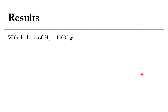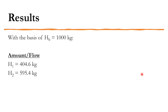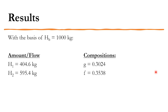Concluding: with the basis of Hb = 1000 kg, honey 1 is 404.6 kg and honey 2 is 595.4 kg. The composition of blend Hb is: glucose 0.3024, fructose 0.3538, sucrose 0.06595, and water 0.1779. Material balance has been solved quickly and efficiently using EES — but be very careful when copy-pasting equations and ensure that degree of freedom remains zero.